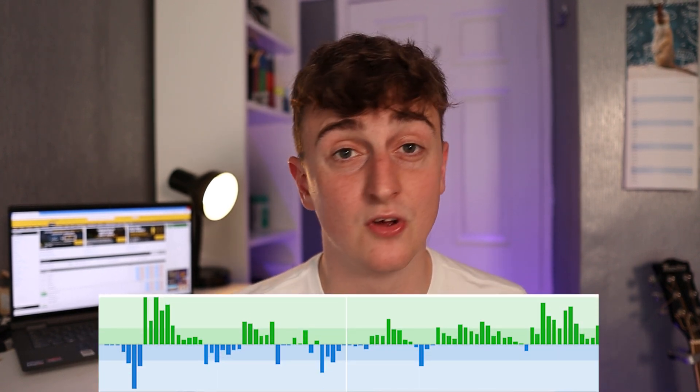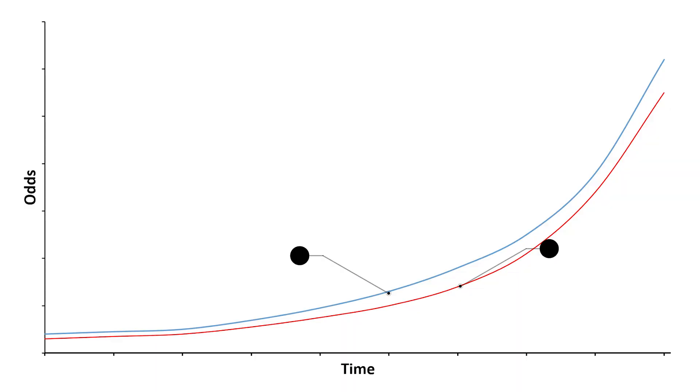I selected somewhat cartoonish examples to deliberately make my point. In reality, not everything will be as easy as this. You're going to find games where nothing seems to be happening and a goal is scored out of nowhere, and games where both teams create chance after chance but the goal never comes. Not every game will reach the same odds at the same time through the half. But overall, if you're selective and choose the right games, you can beat that baseline probability figure and be profitable using this strategy.